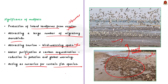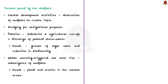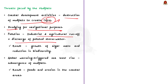Now let us see some of the threats faced by mud flats. The first important threat is due to coastal developmental activities — mud flats are often destroyed to create coastal infrastructure and are also dredged for navigational purposes. The second threat is due to pollution. Industrial and agricultural runoff and polluted storm water drainage affect the soil quality of mud flats, resulting in growth of algal mats, which affects biodiversity and results in reduction of migratory shorebirds.